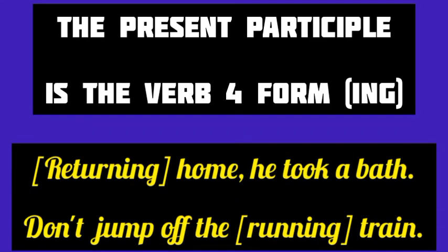The present participle is the fourth form or the I-N-G form of the verb. For example, returning home, he took a bath. Here, returning is the I-N-G or fourth form of the verb return, and here it is modifying the pronoun he.